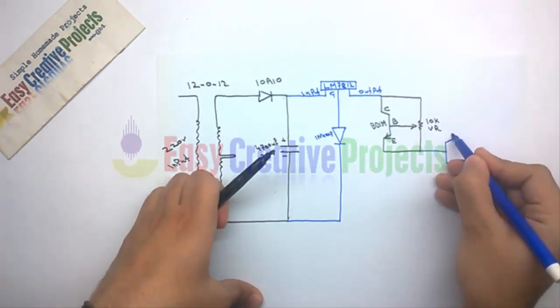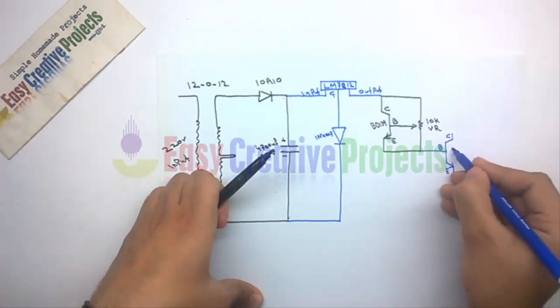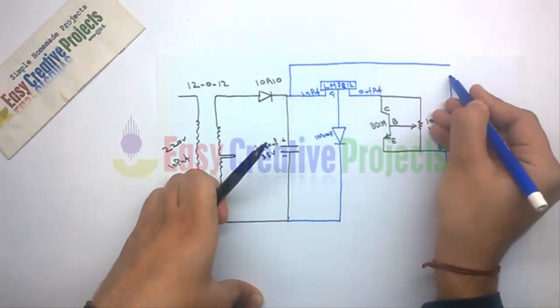Now TIP3055 transistor base pin connect with emitter of BD139. Now collector pin connect with input pin of voltage regulator.